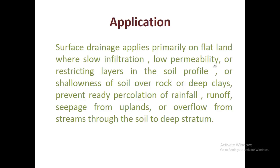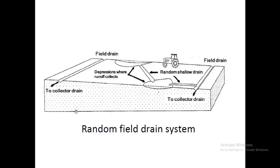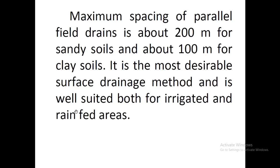Surface drainage is applied primarily on flat land where slow infiltration or low permeability causes water to pond on the surface. Collector drains are provided so that water can easily be moved from the surface. The types of surface drainage systems include the random field drain system, parallel field drain system, parallel open ditch system, and bedding system. These are explained with pictorial views.